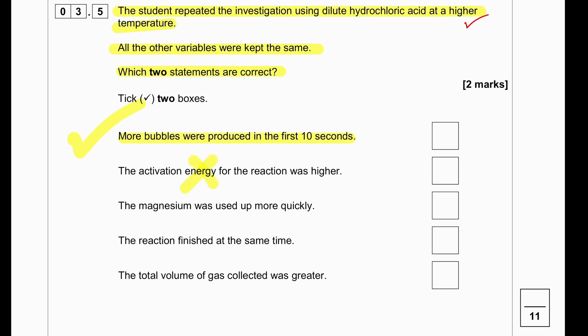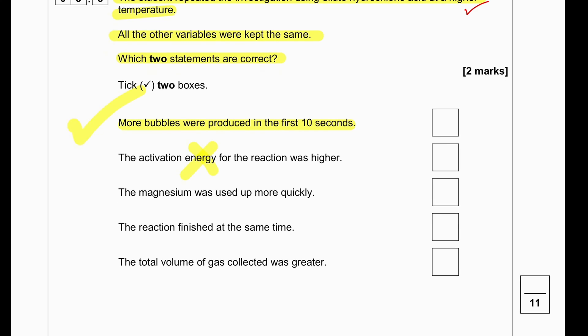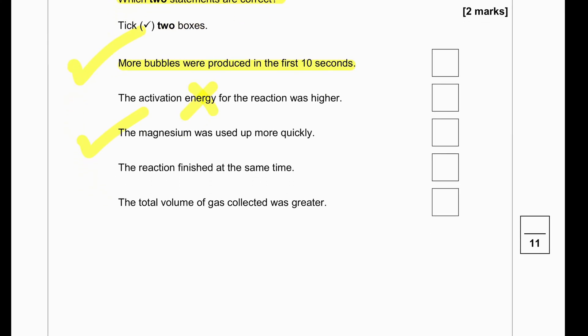Activation energy for the reaction was higher? No. Activation energy does not change because of higher temperature. Magnesium was used up more quickly. Yes, magnesium will be used up more quickly because at higher temperature, rate of reaction is faster. The reaction finished at the same time. The total volume of gas collected was greater. So, these two will be the correct answer.